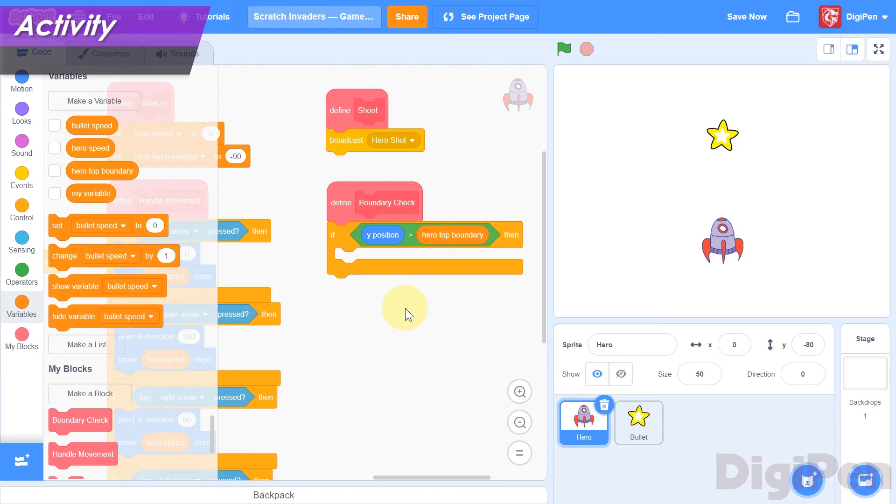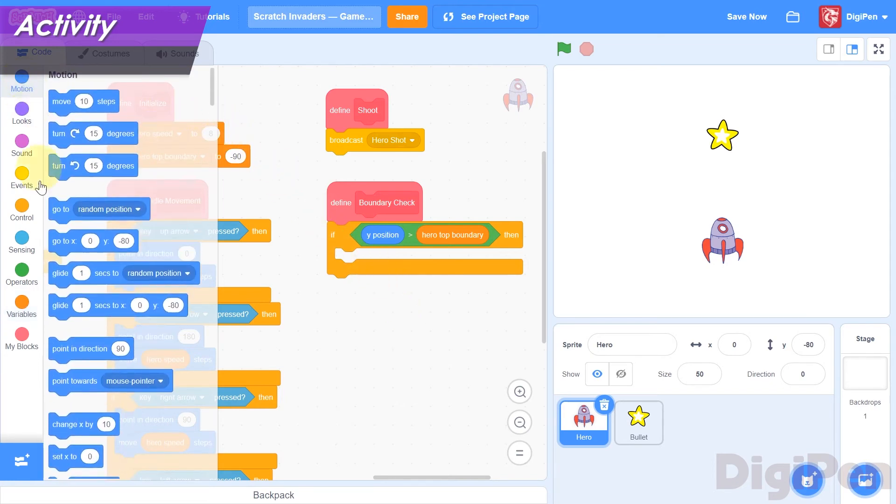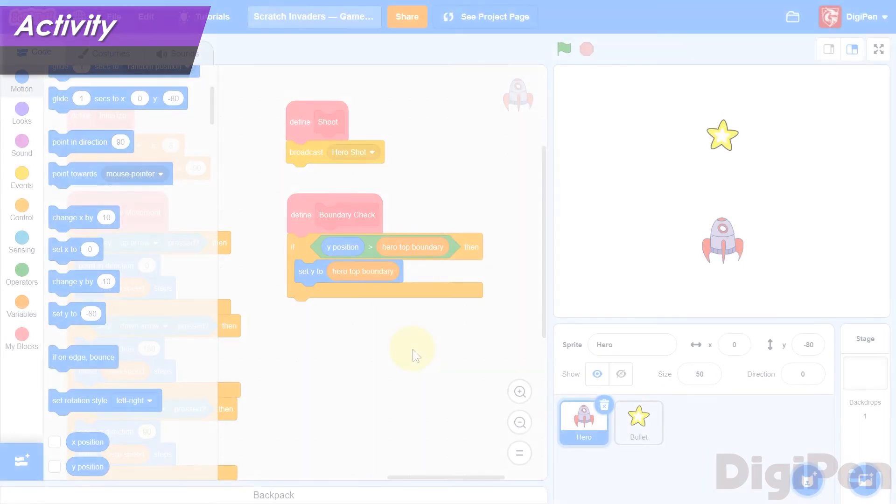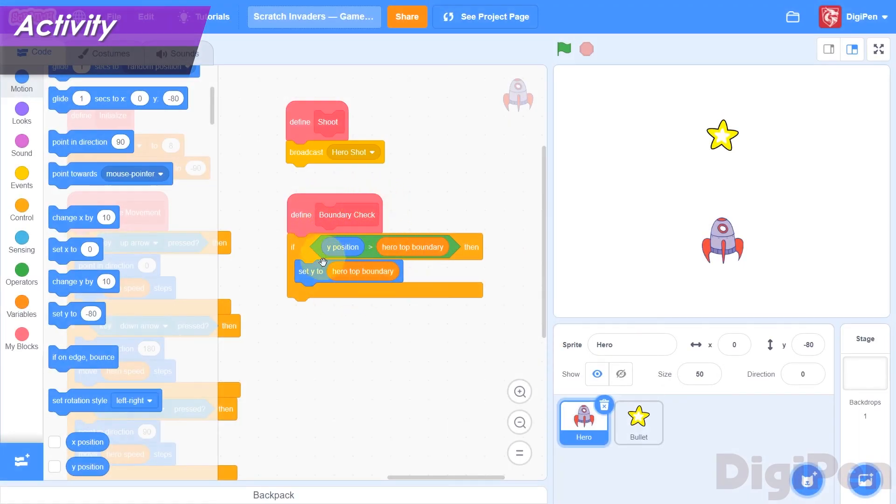If it is, we want to set it to be equal to the top boundary, so click the Medium Blue Motion category, and find the Set Y block. Drag it into the code area, and attach it inside the mouth of the If Then block. Right-click the Hero Top Boundary Reporter block, and select Duplicate. Place the new copy inside the value field in the Set Y block. This completes the Boundary Check function.